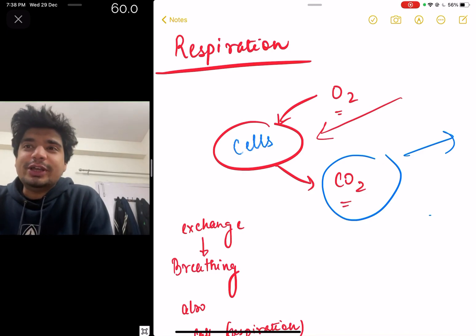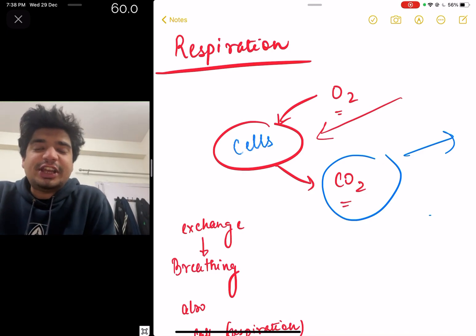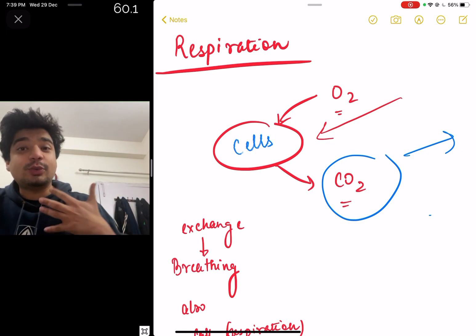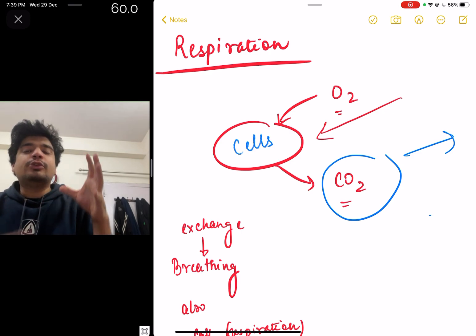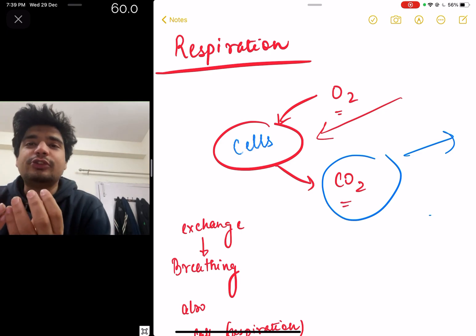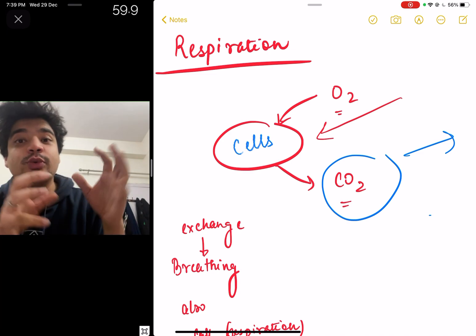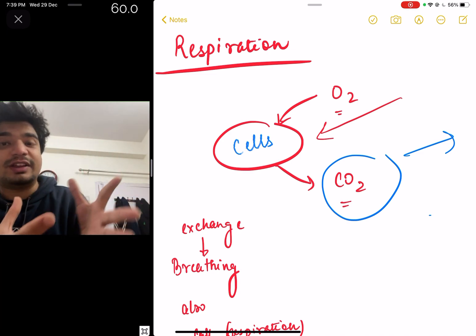Hello everyone, so in this video we'll start with our human physiology lectures again and we'll begin with respiration first. So what is basically respiration or why do we breathe? Basically every cell in our body requires oxygen. It requires oxygen to metabolize glucose, amino acids, or fatty acids to release energy which is then used by the cell.